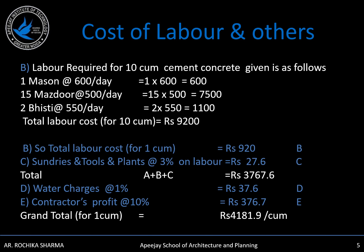3% for sundries and tools and plants will be Rs. 27.6 as you can see. The total for cost of material, cost of labor, and tools and plants will be Rs. 3767.6. Water charges at 1% will be Rs. 37.6, and contractor's profit at 10% will be Rs. 376.7. So the grand total for 1 cubic meter of cement concrete will be Rs. 4181.9 per cubic meter. That is how we get the rate for 1 cubic meter of concrete.